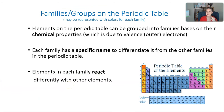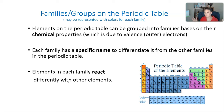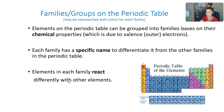Elements on the periodic table can be grouped into families based on their chemical properties. Chemical properties relate to how many valence electrons an element has, which tells us how reactive it is. An atom with one or two valence electrons will be highly reactive, trying to bond with other atoms, while an atom with eight valence electrons is stable and not very reactive. Each family has a specific name, and elements in each family react differently with other elements.